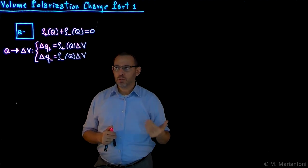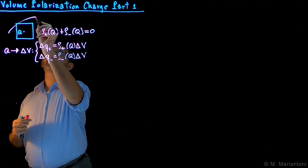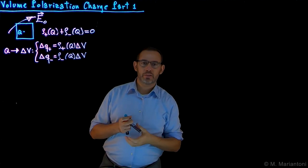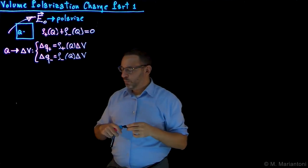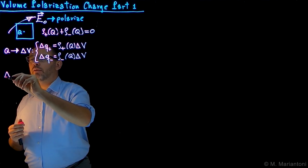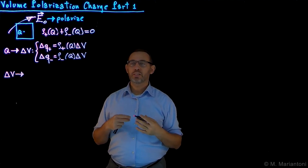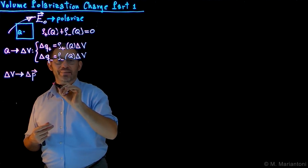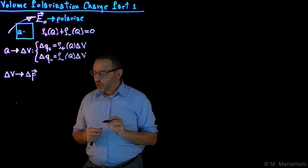Now let us suppose that we do polarize our volume. We switch on some external field E-naught, which means we polarize the system. Now that we polarize the system, delta V is associated with what? Even if originally the solid was comprised of non-polar molecules, once we polarize them it is going to be characterized by the capital delta P electric dipole moment — the overall electric dipole moment of the volume delta V.